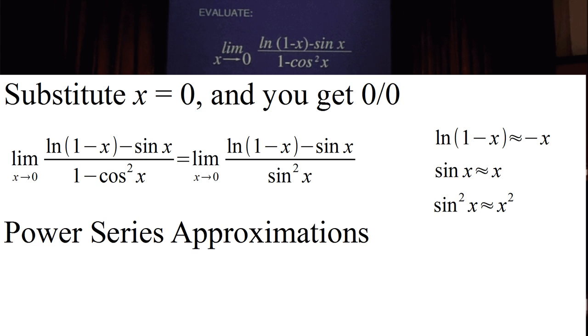So when we look at the limit as x goes to zero, we can use these approximations to consider what the limit might be. When we substitute these in, we're essentially looking for the limit of negative x minus x divided by x squared. This simplifies to negative two over x.